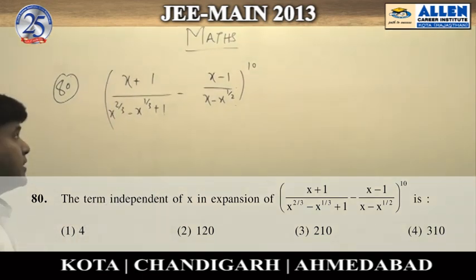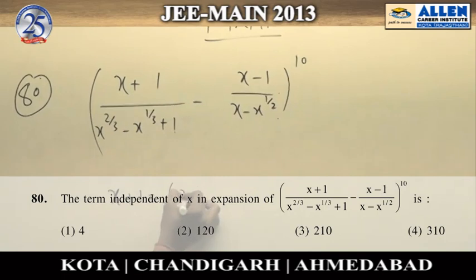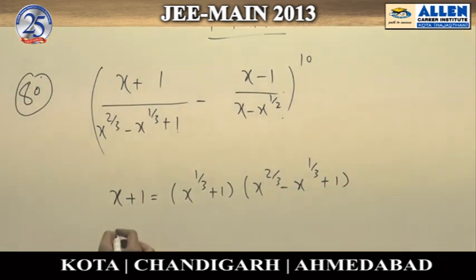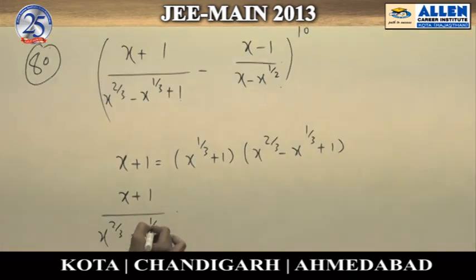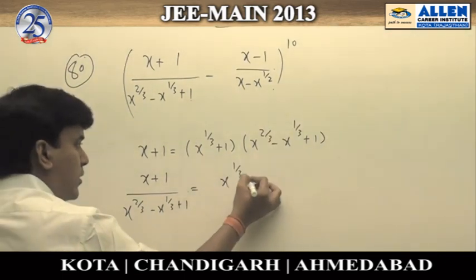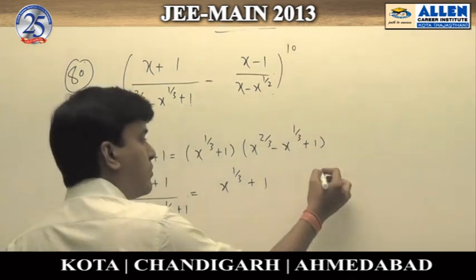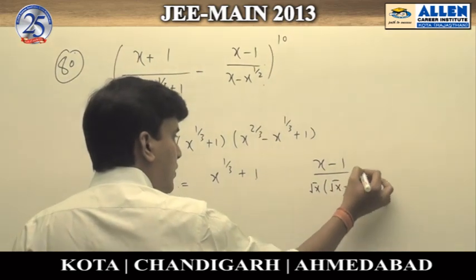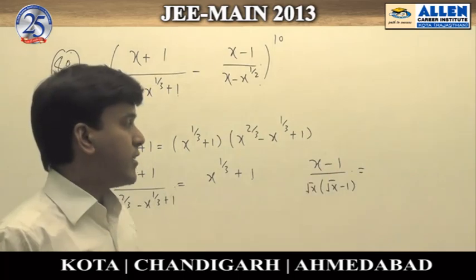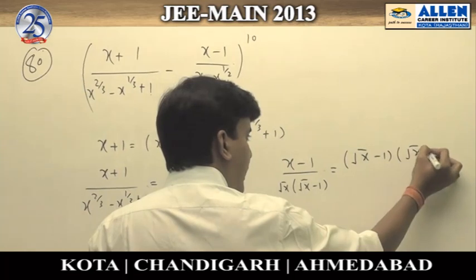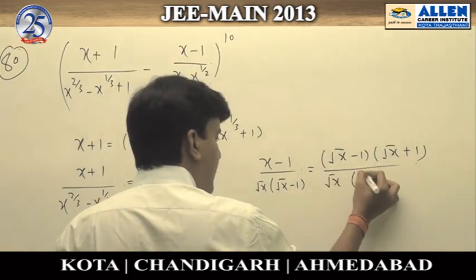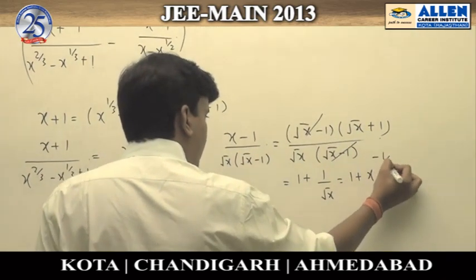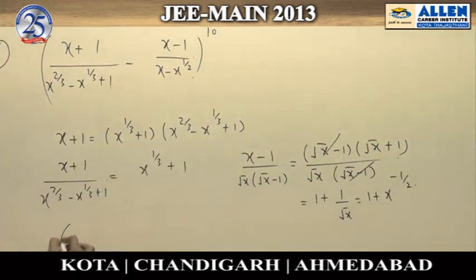Question 80 asks for the term independent of X in a given expansion. We can factorize X+1 as (X^(1/3) + 1)(X^(2/3) − X^(1/3) + 1), so (X+1)/(X^(2/3) − X^(1/3) + 1) = cube root of X + 1. Similarly, the second term (X−1)/(X − √X) simplifies: factoring out √X gives (√X − 1)(√X + 1) in the numerator, the (√X − 1) cancels, leaving 1 + 1/√X, or 1 + X^(−1/2).